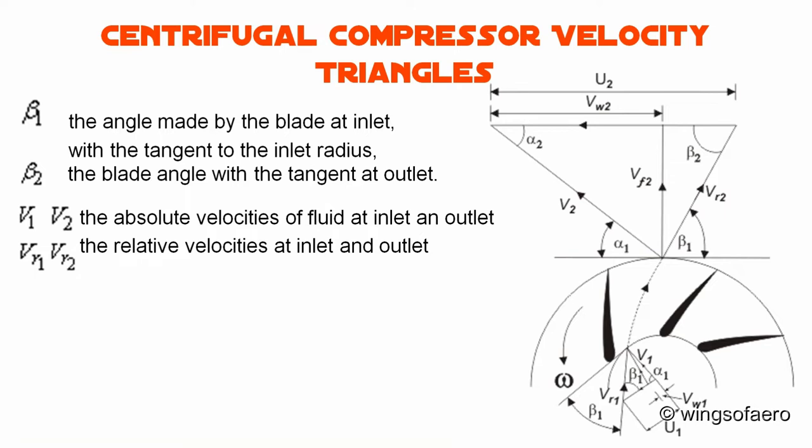Let β1 be the angle made by the blade at inlet with the tangent to the inlet radius, while β2 is the blade angle with the tangent at the outlet. V1 and V2 are the absolute velocities of the fluid at the inlet and outlet respectively. Vr1 and Vr2 are the relative velocities with respect to blade velocity at inlet and outlet respectively.